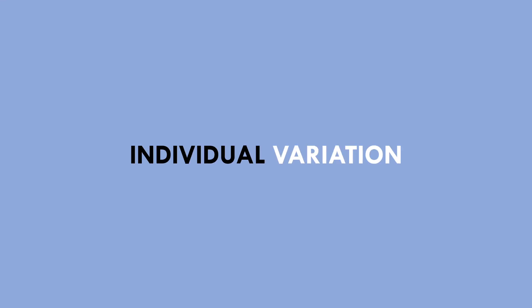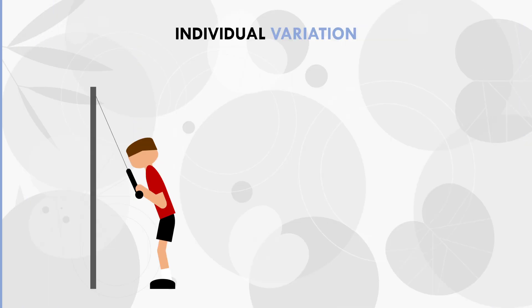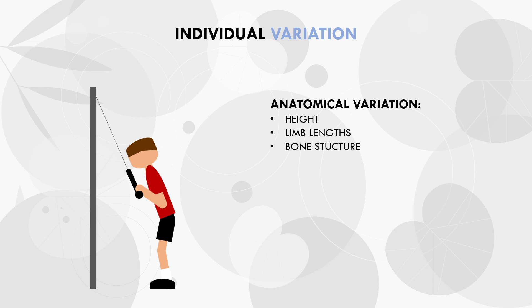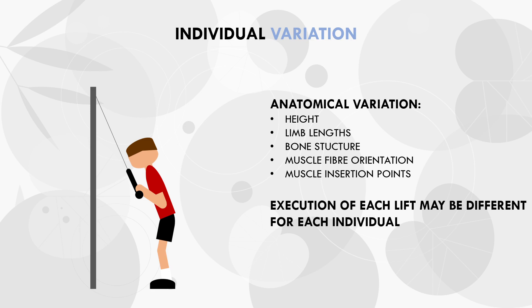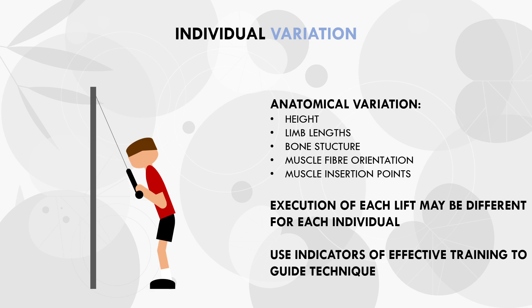The last factor to consider for technique is individual variation. We all have slightly different anatomical structures that we may not even be aware of. There can be obvious differences in things like height, limb length, and bone structure, but there can also be hidden anatomical variations like muscle fibre orientation and muscle insertion points. Regardless of anatomy, the main principles should still be abided by, but the exact execution of each lift may look slightly different for different people. Trainees can use the mind-muscle connection during a set, the pump after a set, and muscle soreness the following day to gauge and guide their technique development.